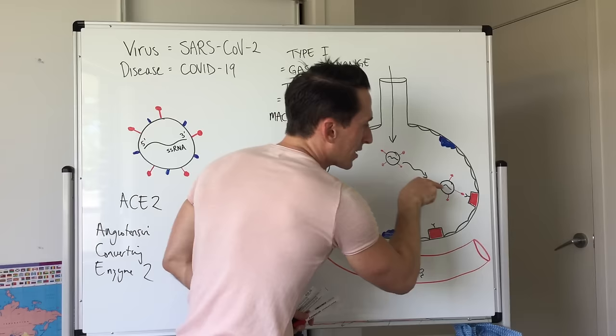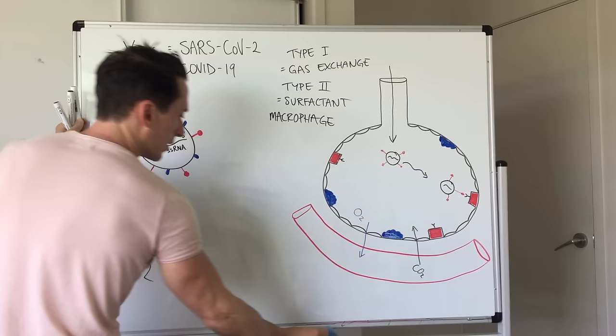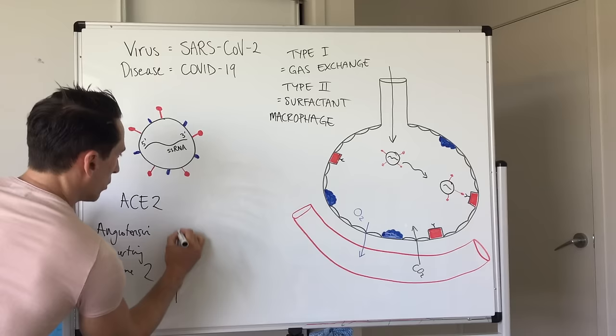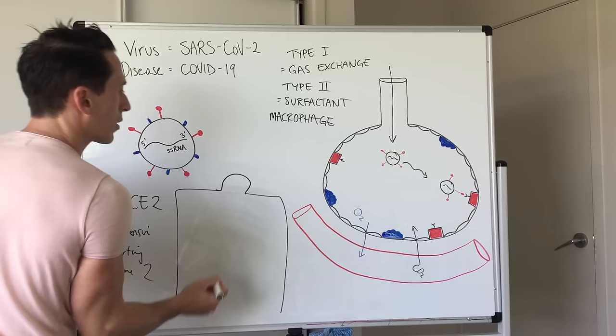Now once that virus is in the cell, let's see what happens. Once the virus gets into that type 2 pneumocyte or type 2 alveolar cell, it needs to replicate and assemble. The virus, when it comes in, it fuses with the membrane of this cell and it releases its components, that single-stranded RNA.